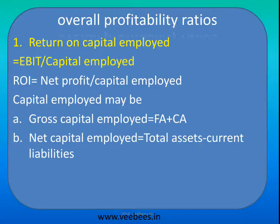Let us move to these areas in detail. The first overall profitability ratio is return on capital employed. The return here is EBIT — earnings before interest and tax, that is net profit before interest and tax are deducted. EBIT is simply gross profit minus operating expenses, which gives us operating profit.